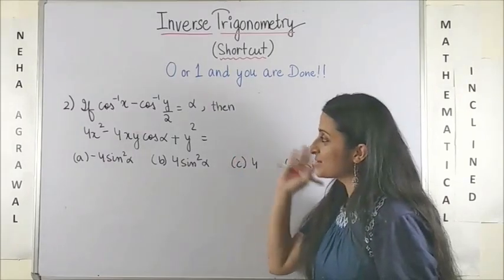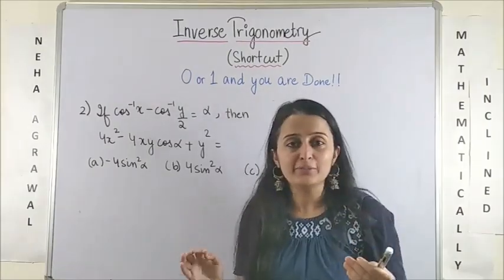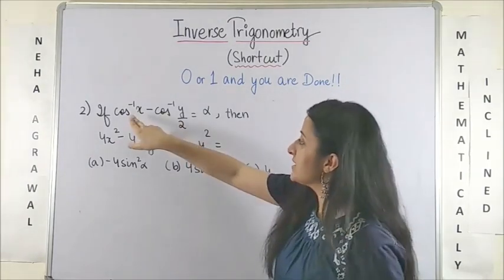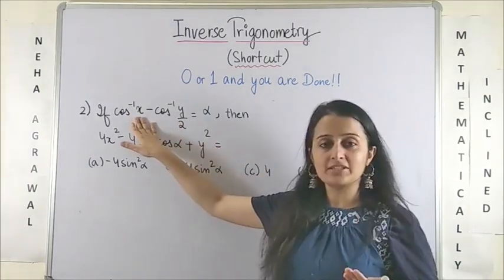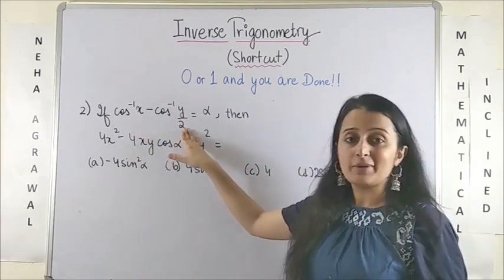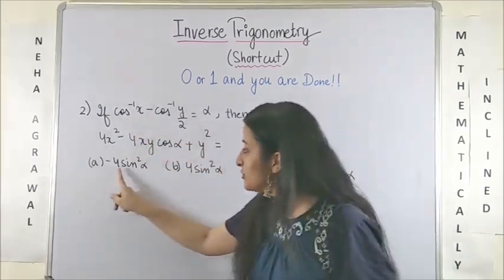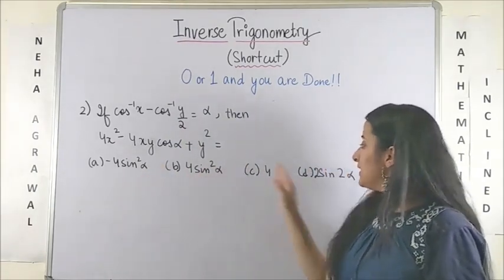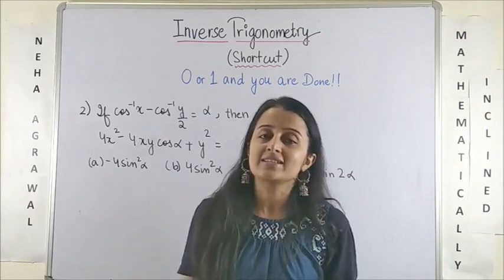Please have a look at this question. We are very tempted to take x as 0 and y as 0 here. But what happens is, if x is 0, cos inverse 0 is pi by 2 minus pi by 2. So my alpha becomes 0. But then a, b and d, they will all give me the same answer. So I will end up getting multiple answers.